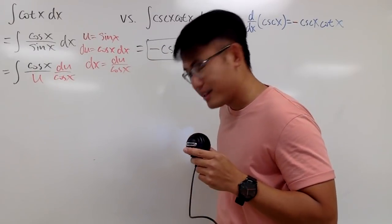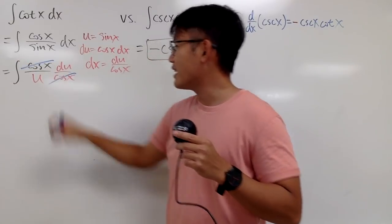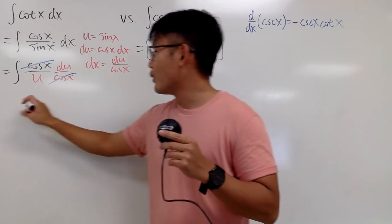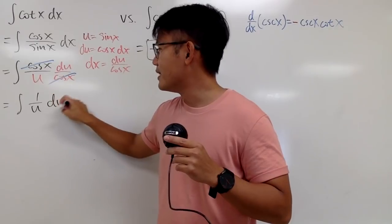And you see, this right here is the best part, because cosine x, cosine x cancel each other out. So we are just integrating 1 over u du.